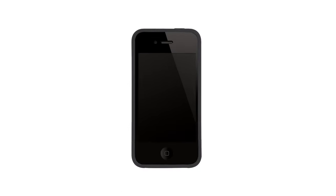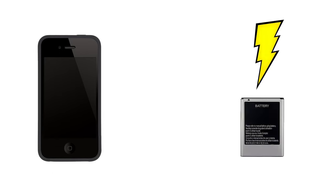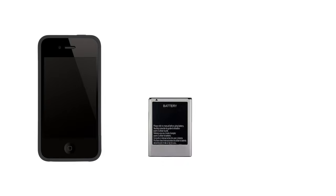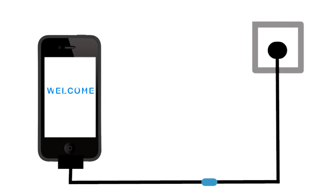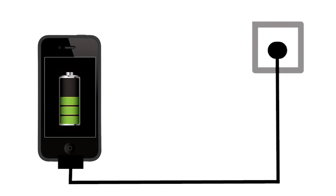Let's look into our daily gadgets like the cell phone. What makes the cell phone work is the electricity supplied by the battery, and what charges the battery is the electricity supplied by the power source. Electricity, as we all know, is an important part of our daily lives.